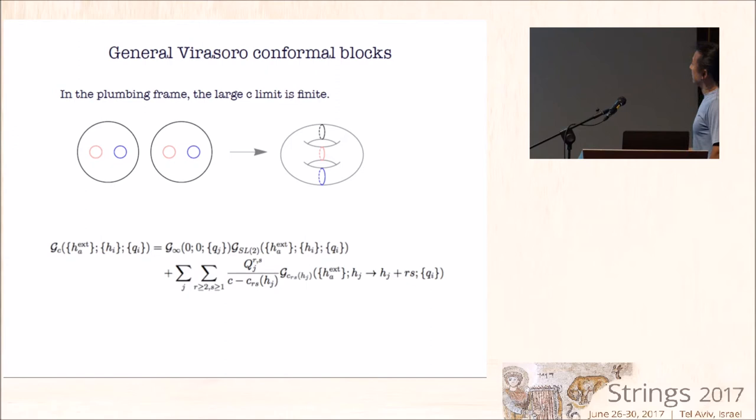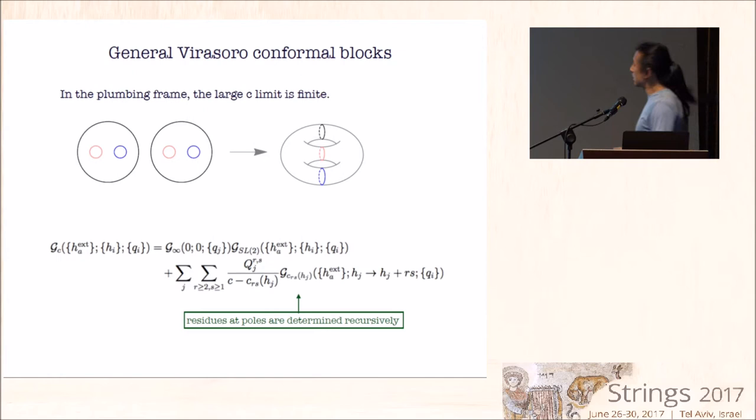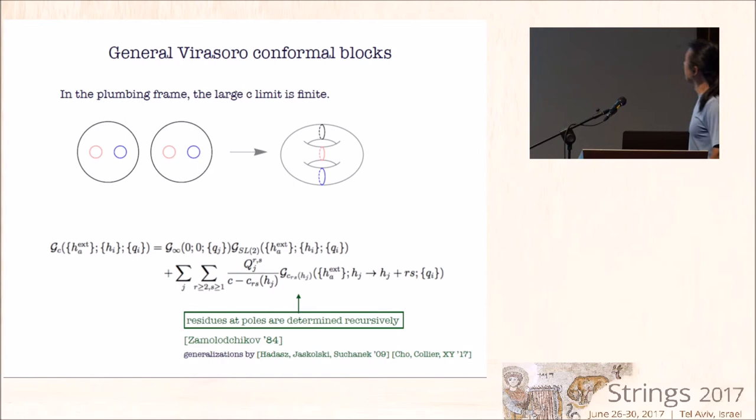In fact, we can now not only compute to some level of efficiency genus two conformal blocks, but more general higher genus Virasoro conformal blocks in principle using the recursion relations. So in the plumbing frame, in this kind of construction, it turns out that in this particular conformal frame the large C limit is finite. That means the conformal anomaly factor is just not there. I remind you that in this frame the modular invariance is not manifest. In this frame there exists a general recursion formula of the conformal block.